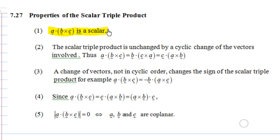Point number two, the scalar triple product is unchanged by a cyclic change of vectors involved. A dot B cross C is equal to B dot C cross A equal to C dot A cross B. What does it mean by a cyclic change of vector involved? Can we find a simple way to remember this?